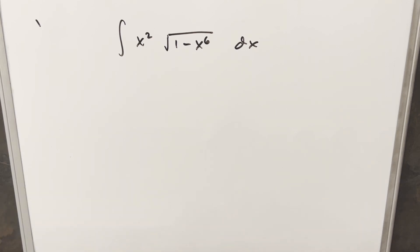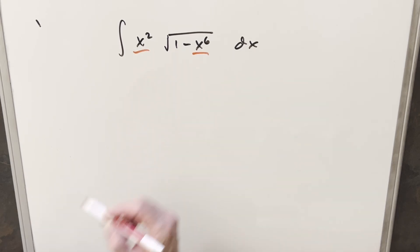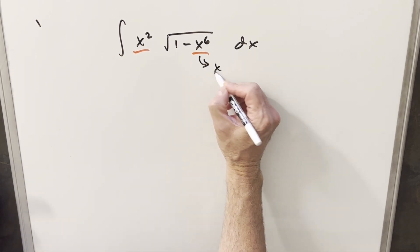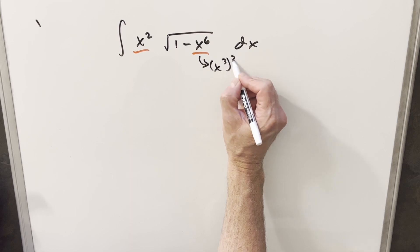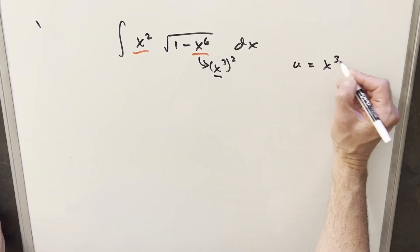Okay, to get started with this, I think what I want to do is a u substitution. And what I want to do is relate this x to the 6 to the x squared. But that's not going to work too well together. But if I rewrite this, if I look at this x to the 6, if we look at this as just x cubed squared, I think this is going to work well if I just make my u substitution for x cubed.